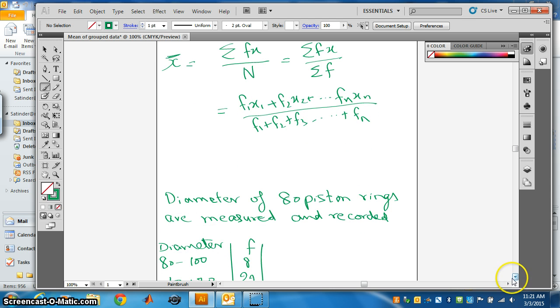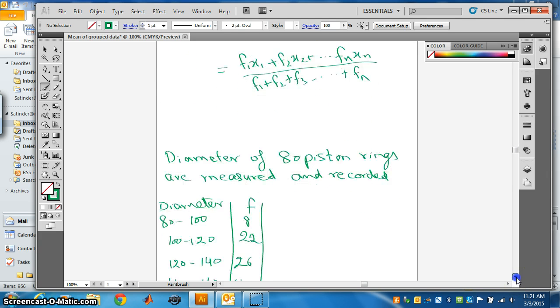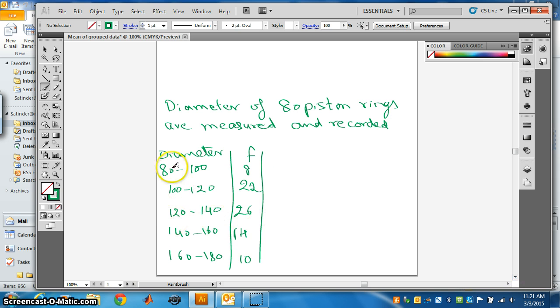Suppose the diameter of 18 piston rings are measured and recorded here. These are the class intervals and the frequencies given. First class interval is 80 to 100 and its frequency is 8.